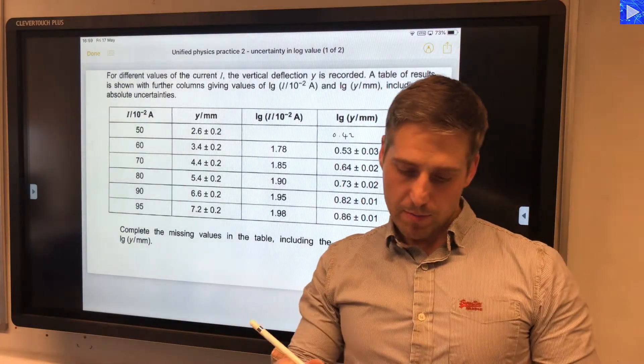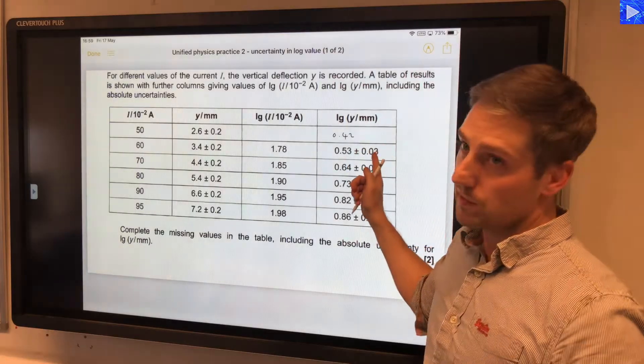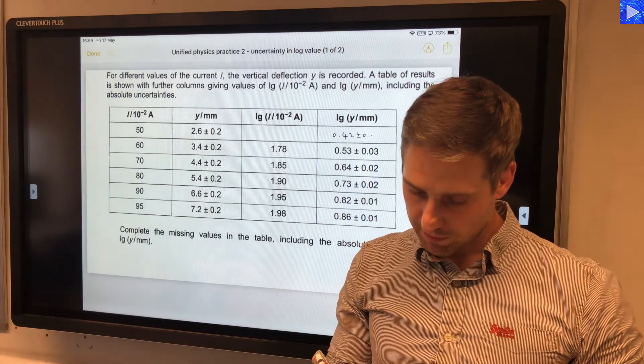I need to round that up, because I need to write it down to the same number of decimal places as the first significant figure of my absolute uncertainty, and it's plus or minus 0.03.